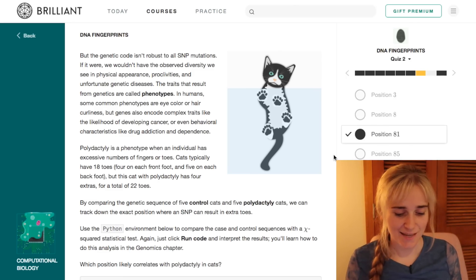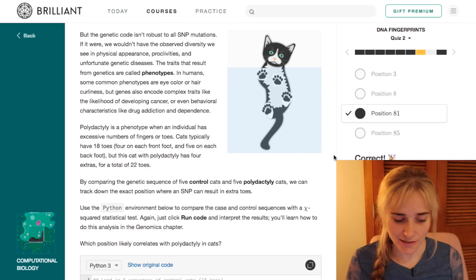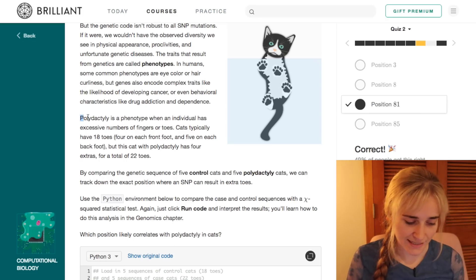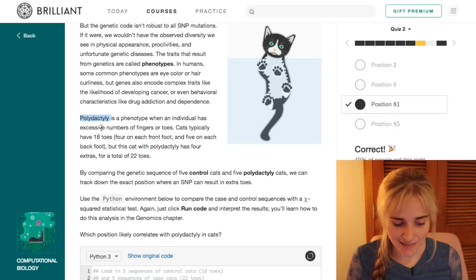We can take another look at the power of some of these computational tools in our next example here, and this one is all about cats, my favorite animal, and it's about something called polydactyly, which is when an individual has an excessive number of fingers or toes. Cats typically have 18 toes, but a cat with this condition has four extra toes, a total of 22.